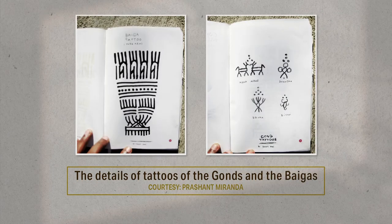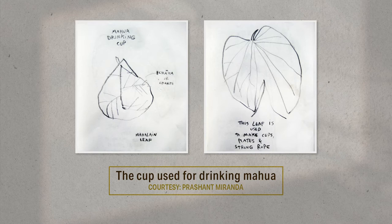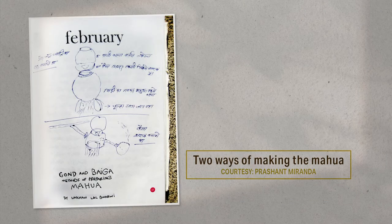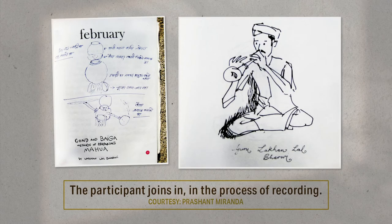His sketches carefully record objects and visuals that exist in the context: the patterns of tattoos, the structure of the Mahua drinking cup, the traditional costumes and dances. One drawing explains two different processes of preparing the Mahua drink. This sketch is made by one of his participants, Lakhanlal Bharvi. This kind of shared record-making makes the process a collaborative one. Let us hear from Prashant on how he uses drawing as a medium for engagement and learning.